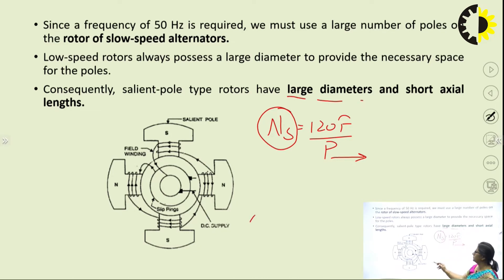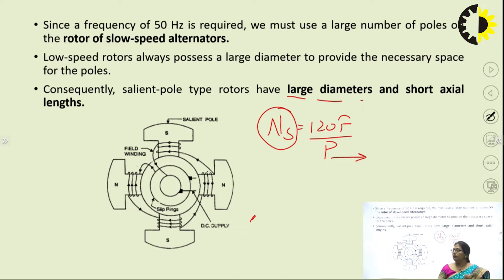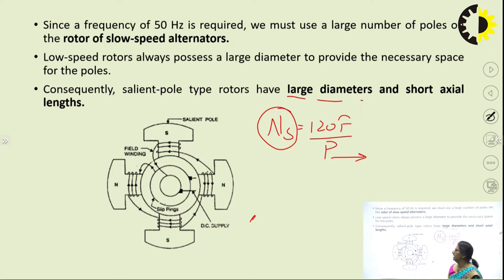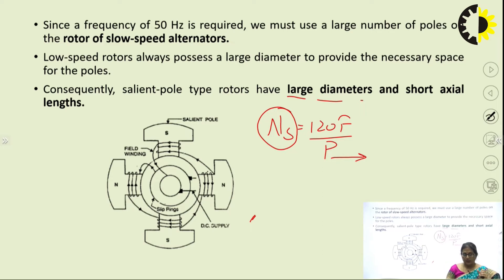For a 50 Hz frequency requirement, slow-speed alternators need a large number of poles. Using NS = 120F/P, more poles require larger diameter. So salient pole rotors are characterized by a larger diameter and shorter axial length. In the figure, the poles project outwards with field windings wound on them, and the larger diameter accommodates more poles for lower speeds.